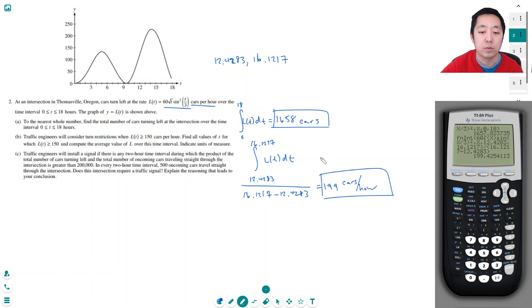And I get this is 199 cars per hour. And the region is between 12.4283 to 16.1217 hours. Yeah, I don't know. That's my time interval that it's above 150.